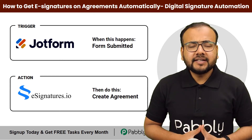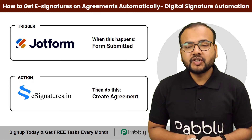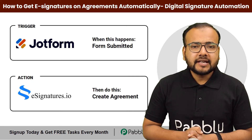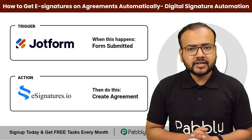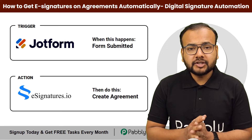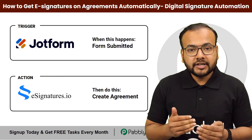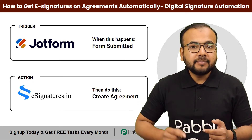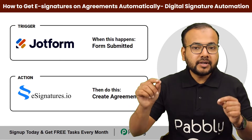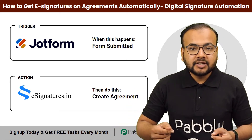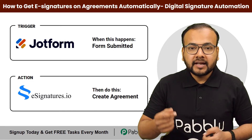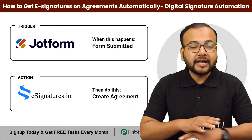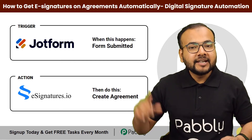In this video, you will learn how you can get e-signatures on your agreements automatically on receiving a form submission. We have created a form using JotForm and when this form is submitted, an agreement will be generated automatically via esignatures.io and sent to the person who submitted the form to get signed through electronic signatures. To set up this automation we are not going to use any coding.